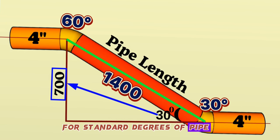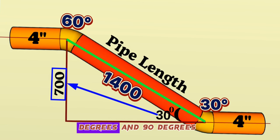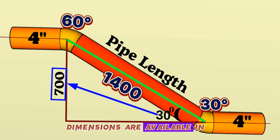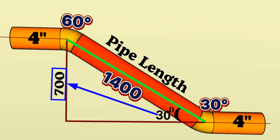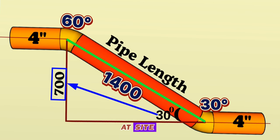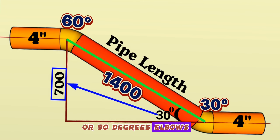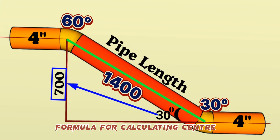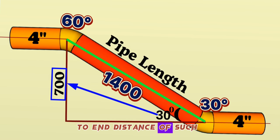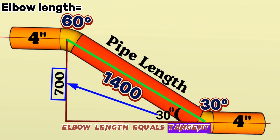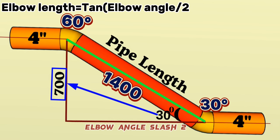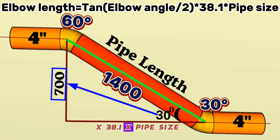For standard elbow degrees such as 45° and 90°, center-to-end dimensions are available in standard pipe charts. However, custom elbow angles are often required on site, cut from standard 45° or 90° elbows. The formula for calculating center-to-end distance of such elbows is: Elbow length = tan(elbow angle ÷ 2) × 38.1 × pipe size.